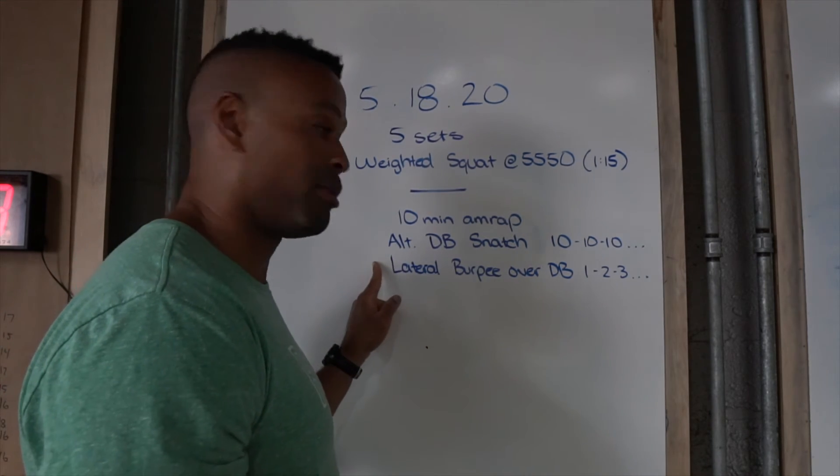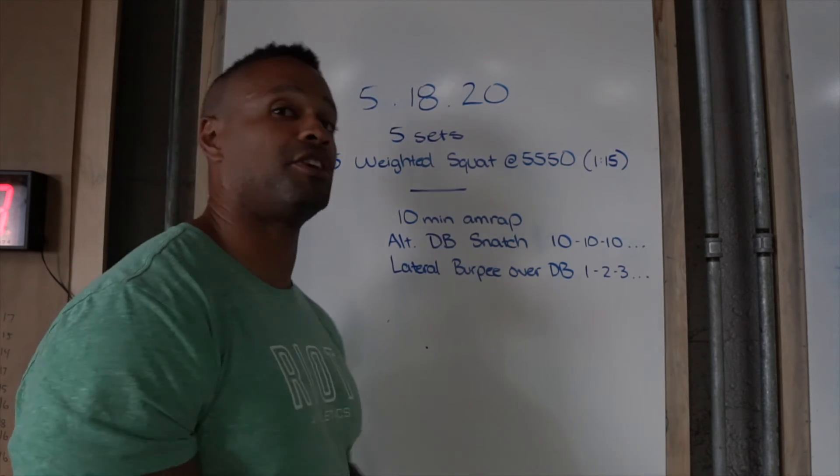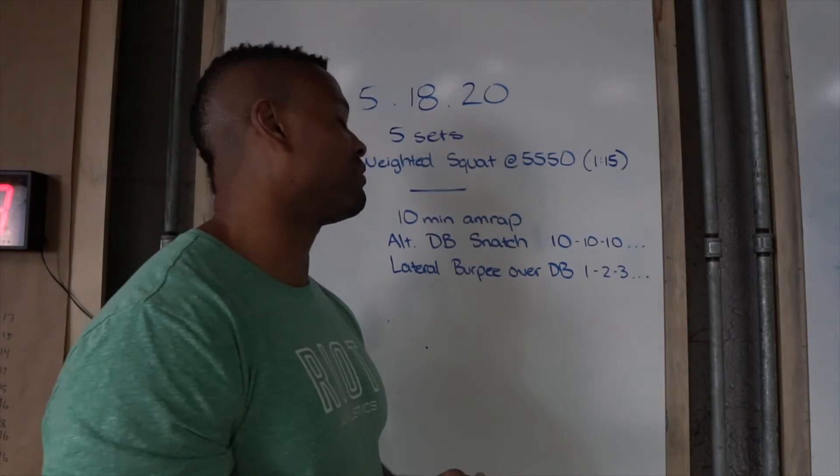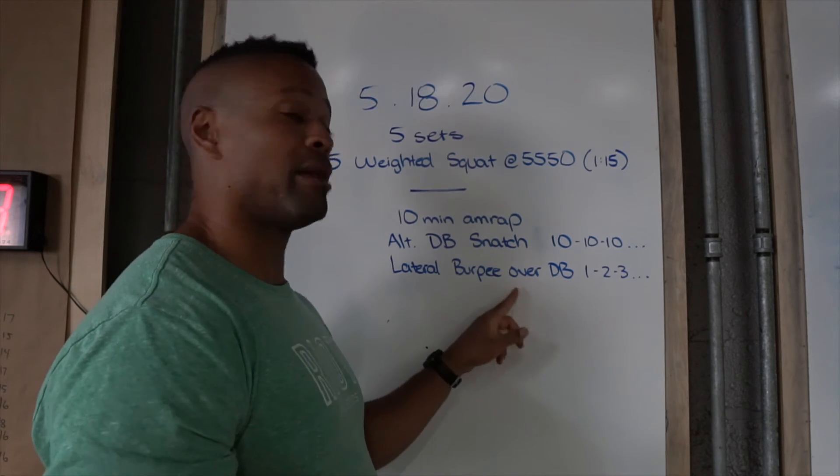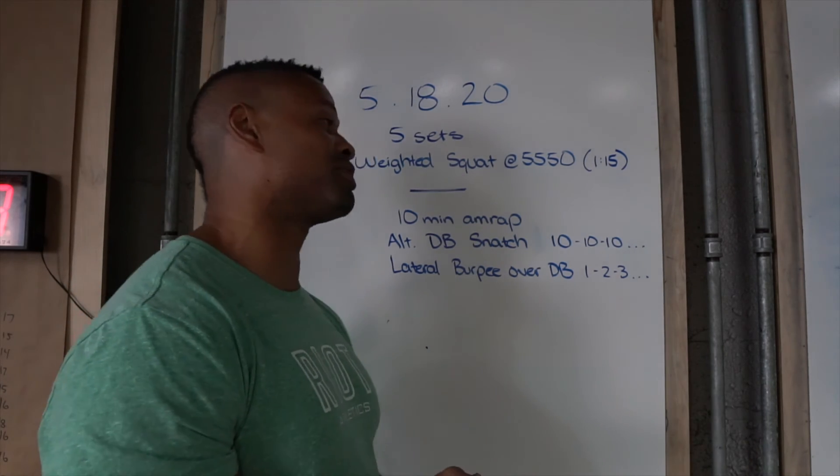So 10 dumbbell snatch, one burpee over the dumbbell, 10 dumbbell snatch, two burpees, 10, three burpees, and you keep doing that. And I think you're really cooking if you can get over 10 burpees. I think some folks might even get into the 11, 12, maybe even 13 reps if they're really going.